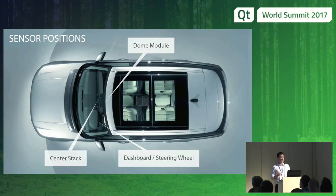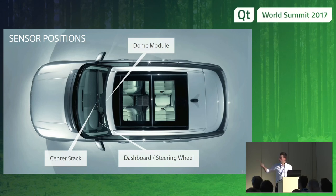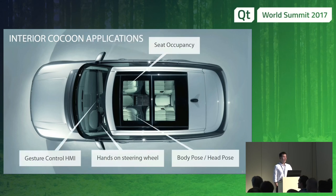One sensor would be in the center stack — a good position to understand gestures and what the driver is doing with the infotainment system without touching it, something like an approach sensor. Then we have sensors in the dome module. Some of you might know the BMW 7 Series — it has a gesture control unit based on 3D sensors looking downward so that gestures of the driver and passenger can be recorded in the center console area. Then we might have the region of the dashboard and steering wheel where the driver is observed. These systems are today called driver monitoring systems. Most of them exclusively focus on the eyes of the driver to detect whether they're closed or open. But we're thinking beyond this — we want to understand if hands are on the steering wheel and what the driver is doing.